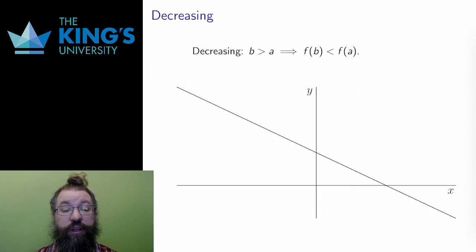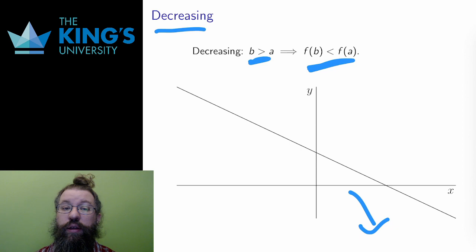And likewise, the function is decreasing if the opposite is true, if it is declining. Algebraically, if one input is greater than another, b greater than a, then the opposite is true for output, f of b less than f of a. And visually, the graph is simply going down.